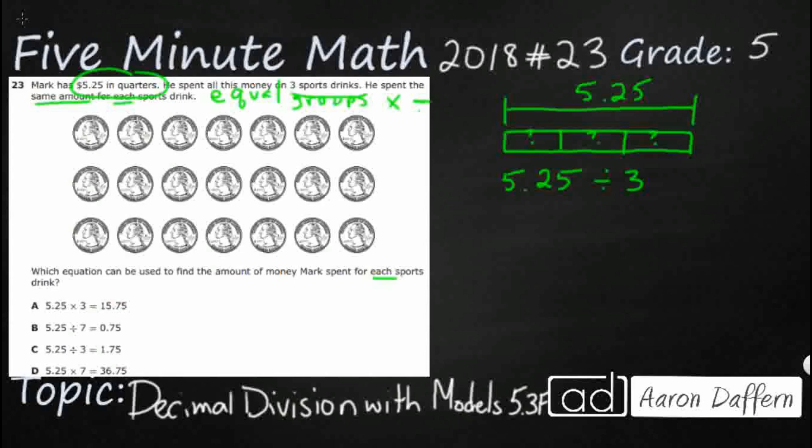Well, if I wanted to use the picture, they went ahead and gave me all of these quarters. Look, they gave us the three equal groups. If you look at this as an array, right, so I've got one, two, three, four, five, six, seven across. And then I've got three rows down. So this is an array, a three by seven array that lets me know that each of these rows is going to equal one of my sports drinks. So this is my sports drink one. This is my sports drink two. This is my sports drink three.